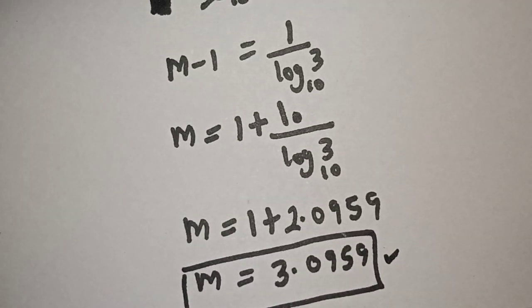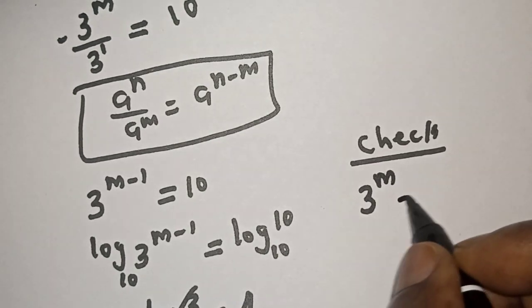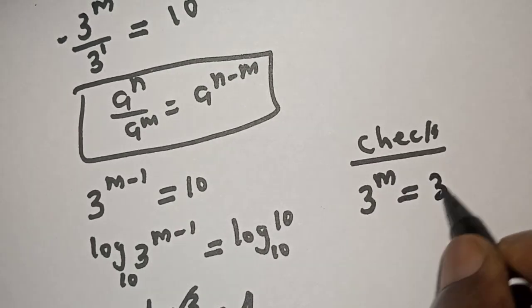We can check to confirm if our answer is right or wrong. Let's check. We have the given equation: 3 raised to power m is equal to 30.